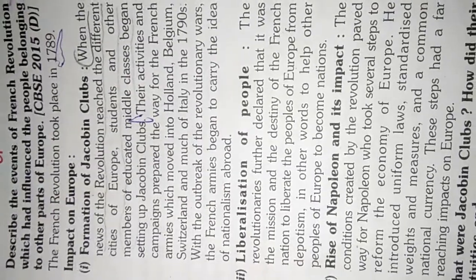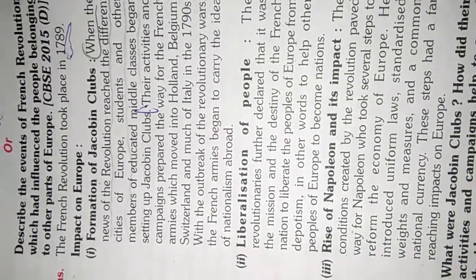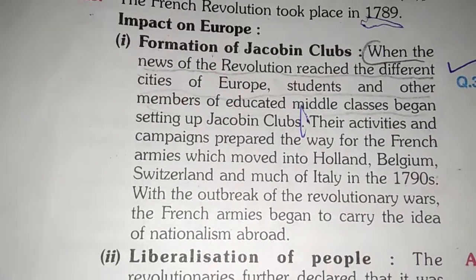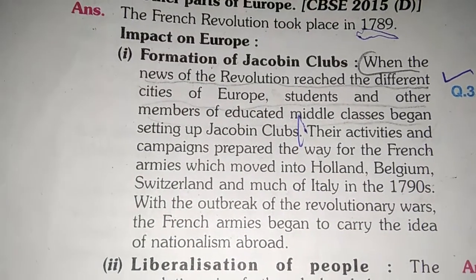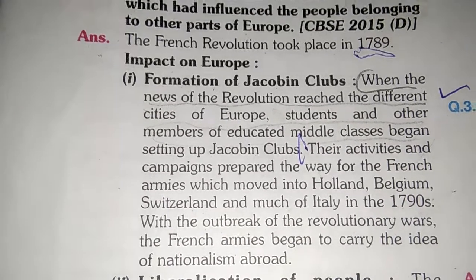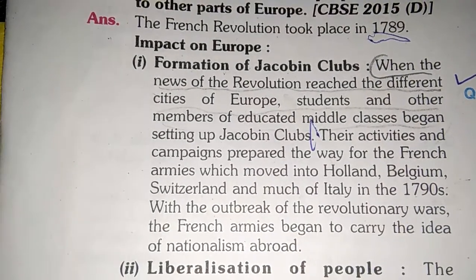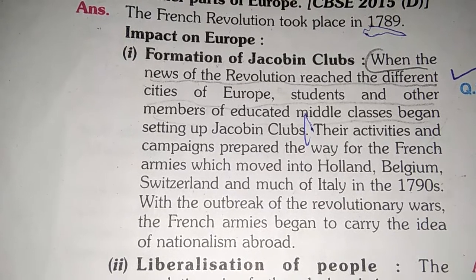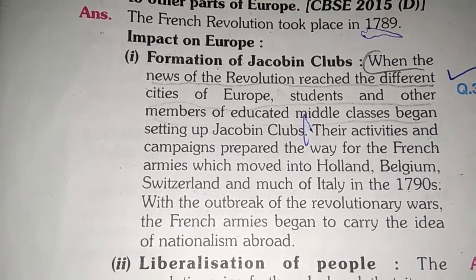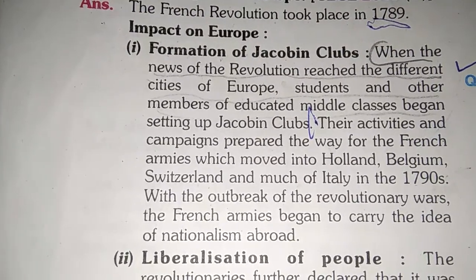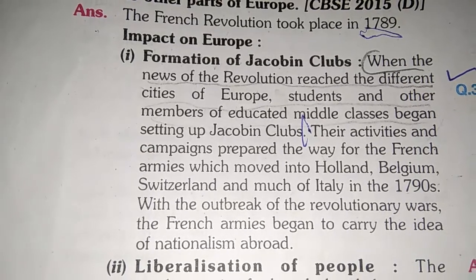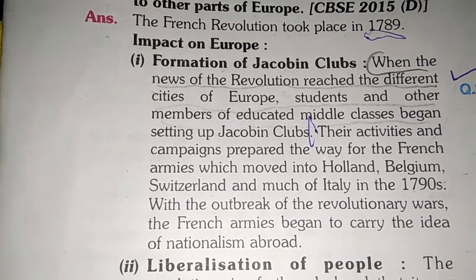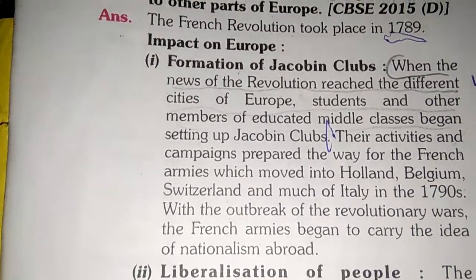Impact on Europe: First was the formation of the Jacobin Club. The news of the revolution spread to different cities in Europe, and students and other members of the middle class started to join the Jacobin Club.